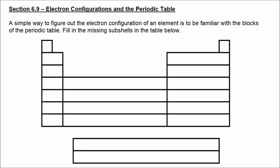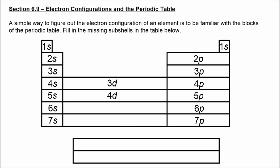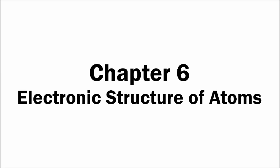Finally, Section 6.9 explains how electron configurations can be determined from patterns in the periodic table. The s block's period number represents the energy level. The p block similarly uses the period number for energy level, except in the fourth period where we include 3d — so d orbitals are one energy level less than the period you're in. The lanthanides and actinides at the bottom correspond to 4f and 5f. Knowing these patterns lets you find the electron configuration for any element. That's the end of the Chapter 6 packet — good luck studying!